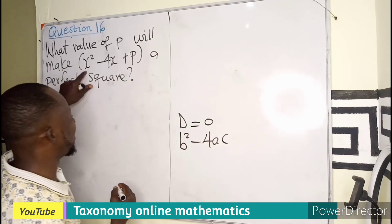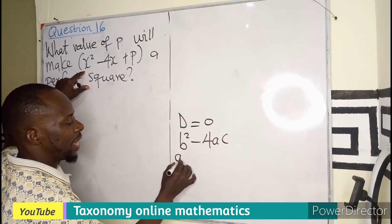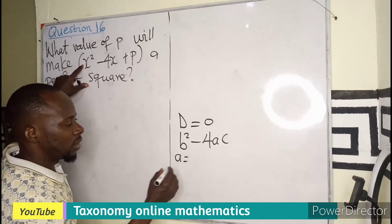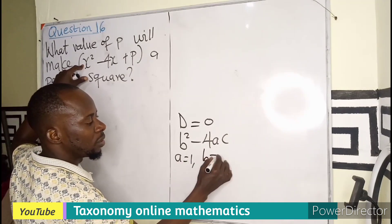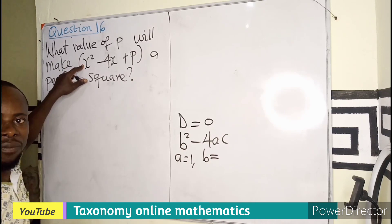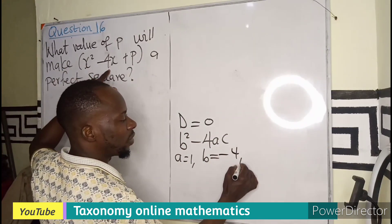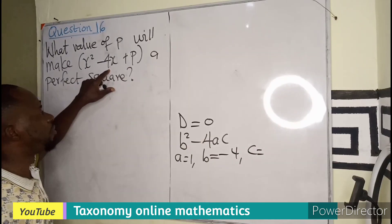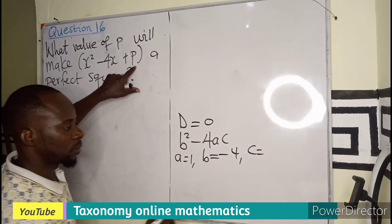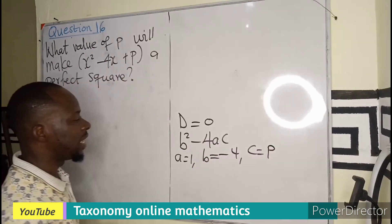Where in this case, our a is going to be the coefficient of x squared, which is 1. B is going to be the coefficient of x, which is minus 4. And our c is going to be P.